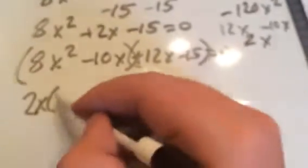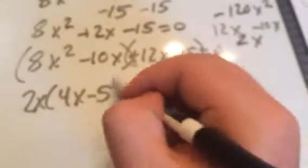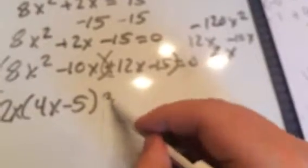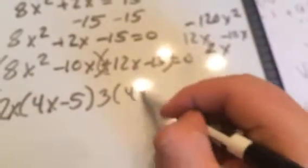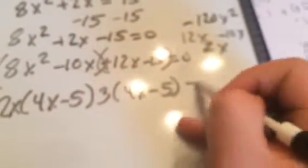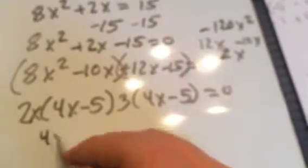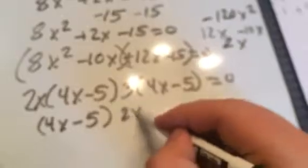So I can pull out a 2x of the first one and get a 4x minus 5. And I can pull out a 3 from the second one and get 4x minus 5 equals 0. Take the common 4x minus 5 and the in-betweens, 2x plus 3.